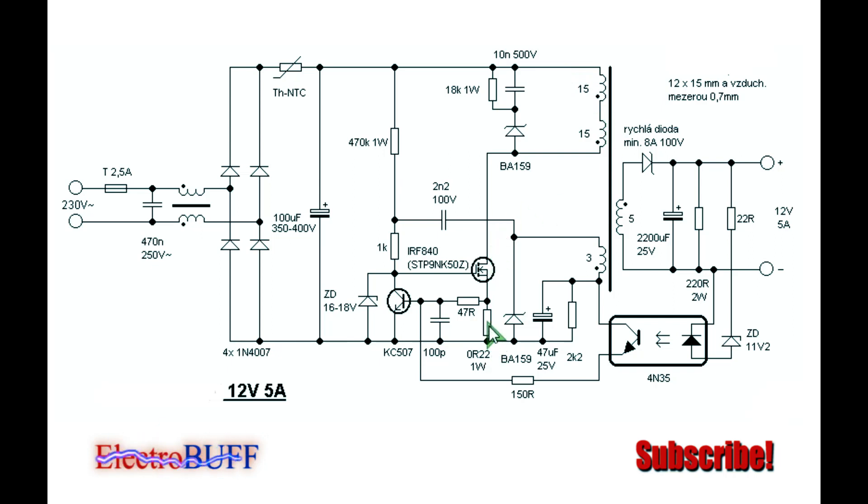There is a current sensing resistor such that when about 0.7V develops at this node, this transistor will conduct and it will connect the gate of the MOSFET to ground, thereby turning off the MOSFET. This acts as a current limitation of the primary side.